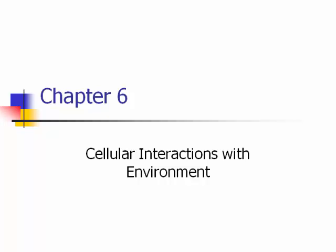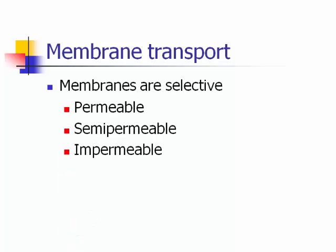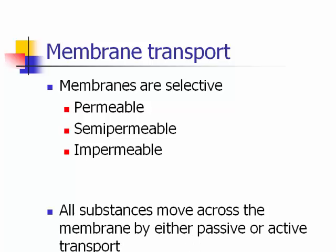Chapter 6: cellular interactions with the environment — this is a preparation for the big chapter on neurophysiology, chapter 7. It would be helpful to read the chapter before listening to this lecture. This is one of the toughest lectures. Membrane transport: membranes are selectively permeable — permeable means anything can pass, semi-permeable means some things can and some can't, and impermeable means nothing can cross.